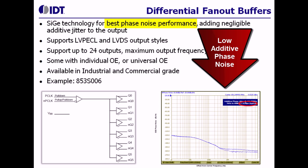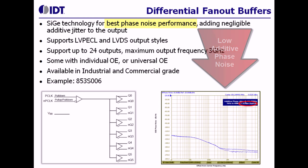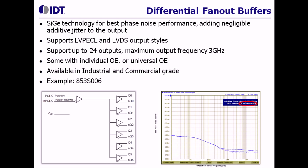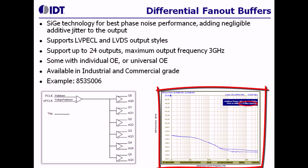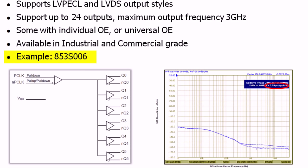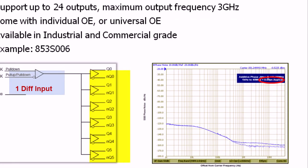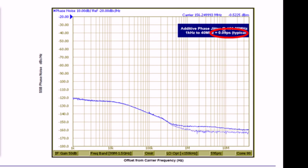You will find that additive phase noise is listed in the AC tables at the back of the datasheets, and in many cases you will also see a phase noise plot in the back of the datasheets too. Here is an example of the 853S006 device, which has one input and six outputs. And in this slide you can also see the additive phase noise for this device.